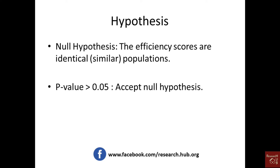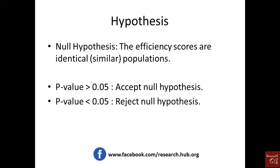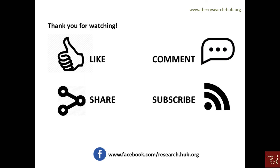We accept the null hypothesis since the p-value was over 0.05, concluding there is no difference in admin procedures whether the company is private, public, or other. If the p-value had been less than 0.05, we would have concluded that the type of company affects admin efficiency.